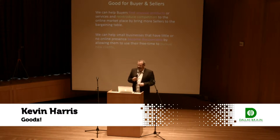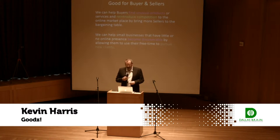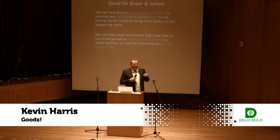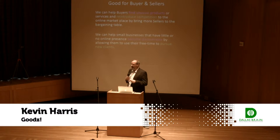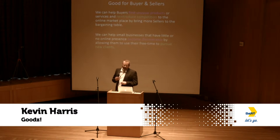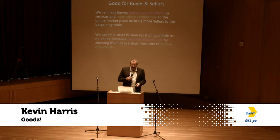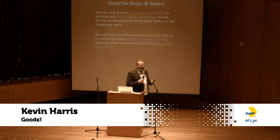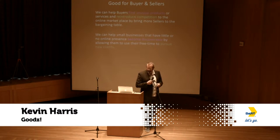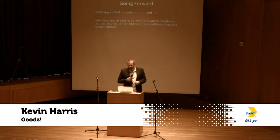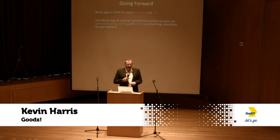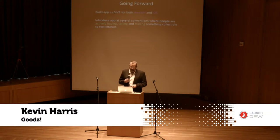This kind of process we think is good for buyers and sellers. We can help buyers find unusual products and services and we can reintroduce competition into the online marketplace by bringing more sellers to the bargaining table. We can help small businesses that have little or no online presence become discoverable by allowing them to use their free time to pursue new clients that they get notified about by the app. Going forward, we're currently working on Minimal Viable Products — MVP — for both Android and iOS devices.